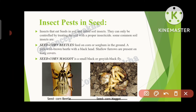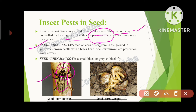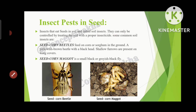Now let's look at insect pests in seed. Insects that eat seeds in the soil are called soil insects; they can only be controlled by treating the soil with a proper insecticide. Common soil insects include the seed corn beetle — a yellowish-brown beetle with a black head and shallow furrows on wing covers that feeds on corn or sorghum — and the seed corn maggot, a small black or grayish-black fly that also attacks corn species.